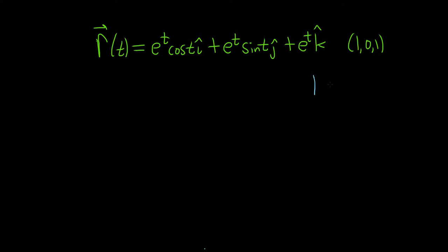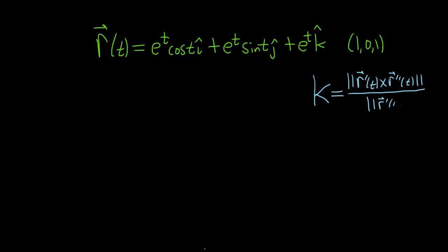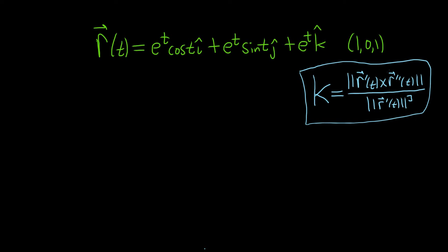The formula we're going to use for curvature is really useful whenever you have a three-dimensional space curve, so whenever you have i, j, and k. We have the magnitude of r prime cross r double prime on top, and the magnitude of r prime cubed on the bottom. This formula only works when you have i, j, and k, because it has a cross product, and the cross product is only defined in three dimensions.